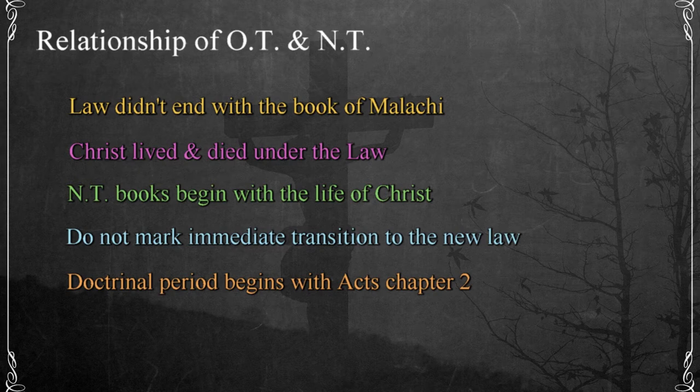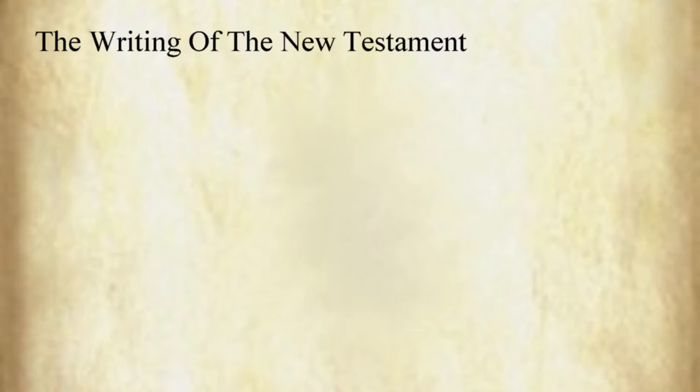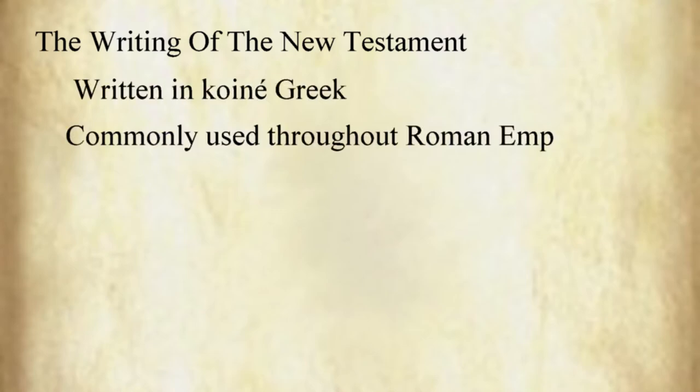We'll cover these events later in more detail as we build the study. For now, we'll concentrate on the content of the New Testament. The 27 books of the New Testament were written during the first century in Koine Greek, which was commonly used throughout the Roman Empire.